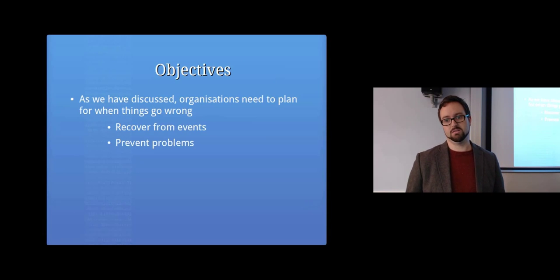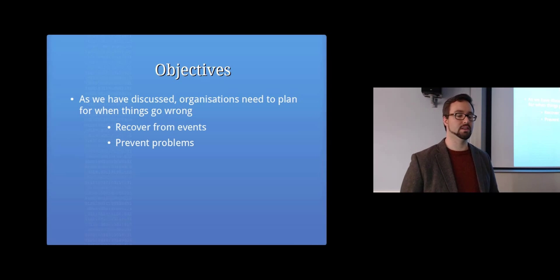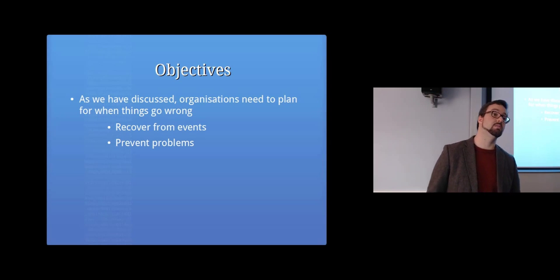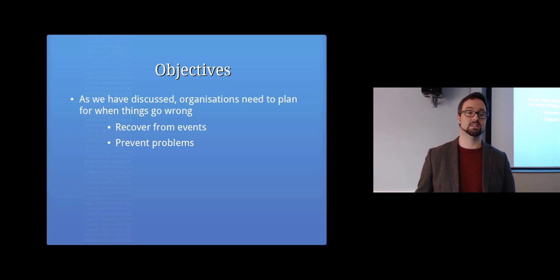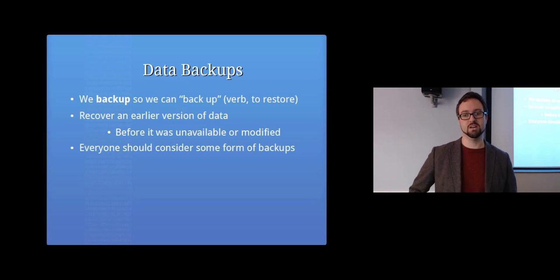As we talked about last week, an organization needs to actually plan for when things go wrong. They need to be able to recover from events and actually prevent the problems in the first place, so they can continue to be able to do the things that they need to do for their organization.